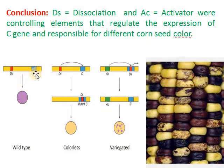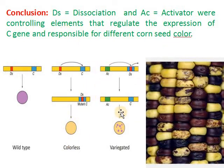The C gene's expression is regulated by DS and AC elements, and that is responsible for the different corn seed colors — purple, colorless, or yellow depending on DS element position.